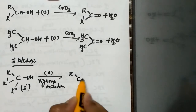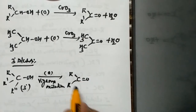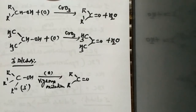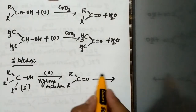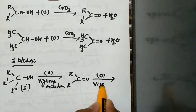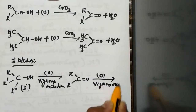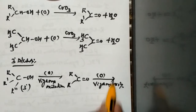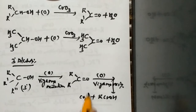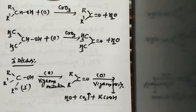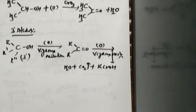Vigorous oxidation of the tertiary alcohol gives rise to a ketone. When this ketone is again subjected to further vigorous oxidation, it gives rise to a carboxylic acid along with the liberation of carbon dioxide gas and the formation of a water molecule.